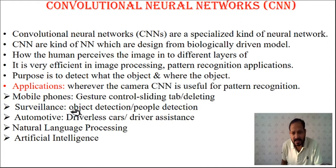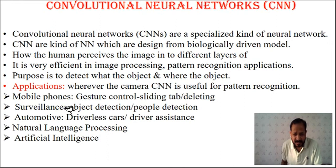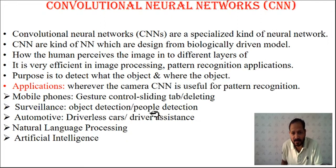In surveillance, CNN can be used for always detecting objects — which may be any animal, fighter planes of enemies, or detecting people entering and exiting a subway tunnel, counting how many people entered or exited. All these applications are related to surveillance.